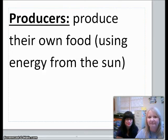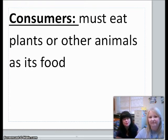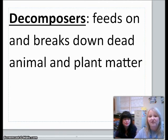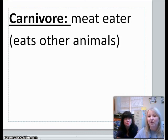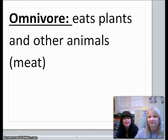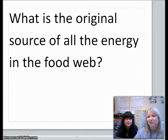Here's the first one. Producers, produce their own food using energy from the sun. Next word, consumers. Consumers must eat plants or other animals as its food. Then we have decomposers, feeds on and breaks down dead animal and plant matter. Herbivore, these are our plant eaters. Carnivore, meat eater or eats other animals. Omnivore, eats plants and other animals, so meat or plants. Then our last question, what is the original source of all the energy in the food web? Think about that and we'll talk about it in class.